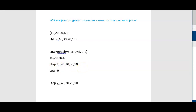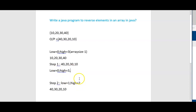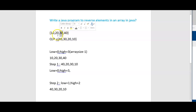Low equal to 0, high equal to 3 at the first step. After this at step 2, we will increment low and decrement high. Now low will be 1 and high will be 2. The element at position 1 is 20, at position 2 is 30. Swap these two elements — it will become 30 and 20. Repeat this process till low is less than high.